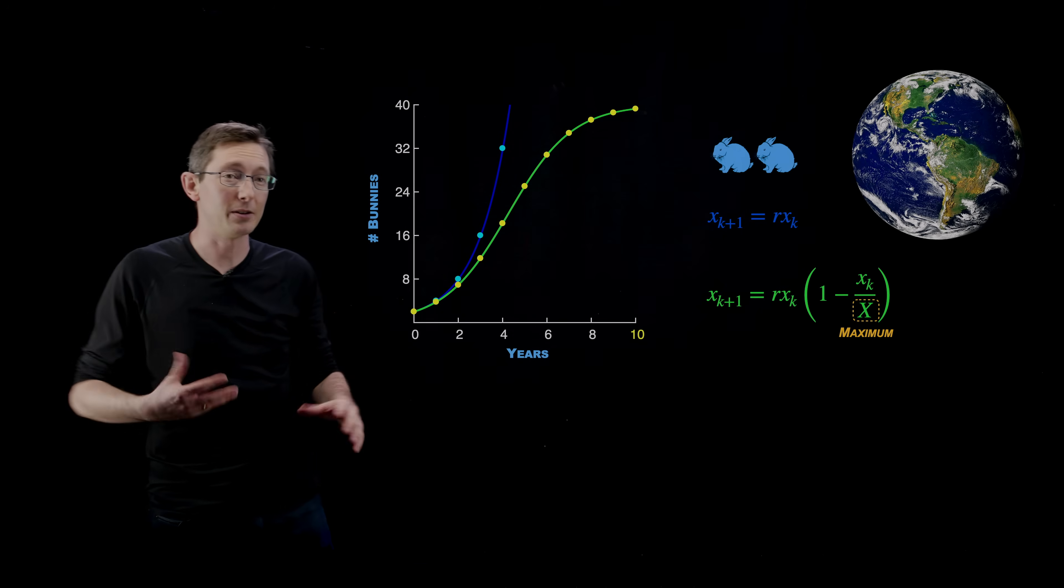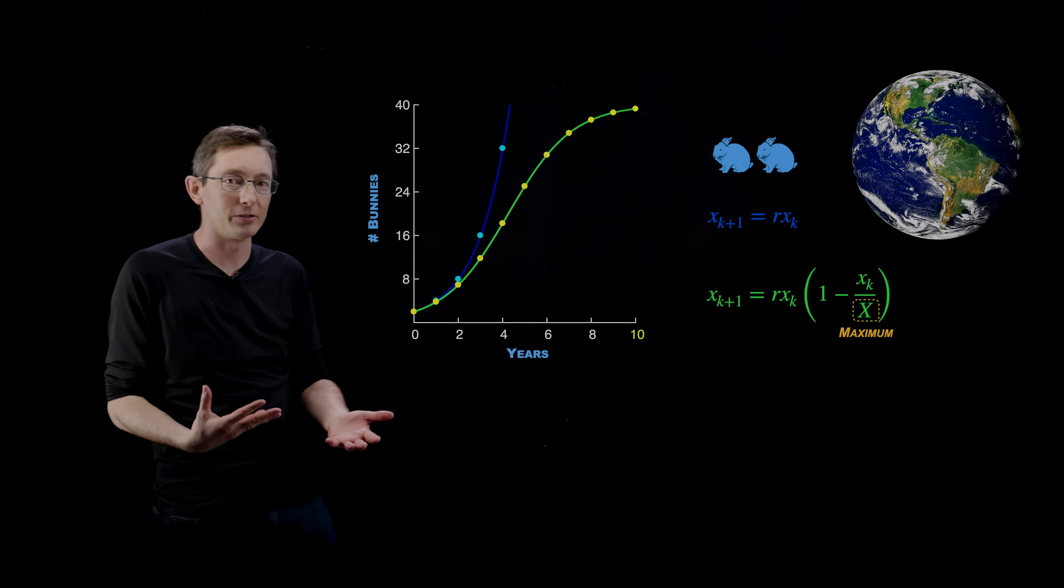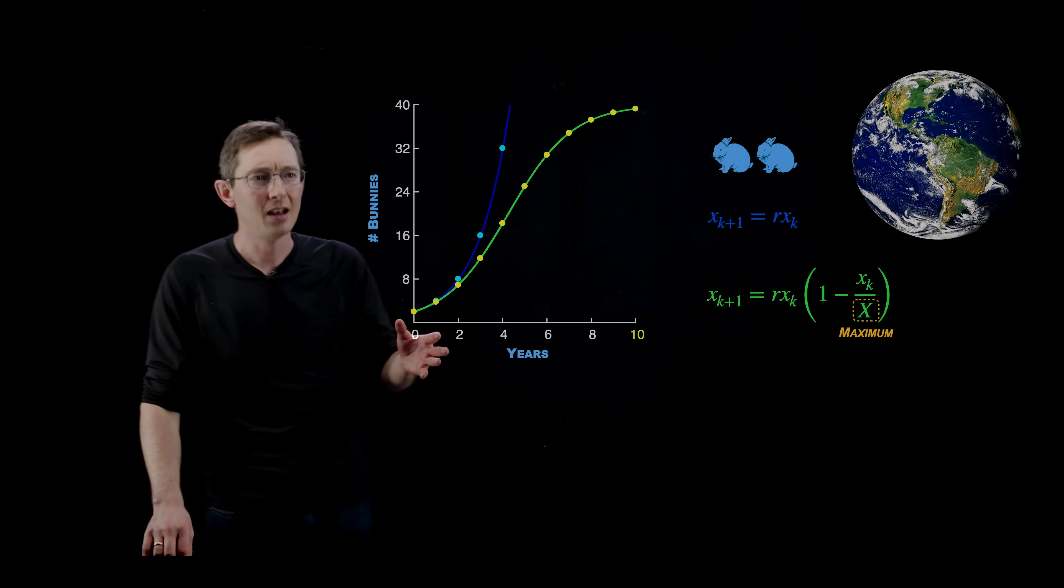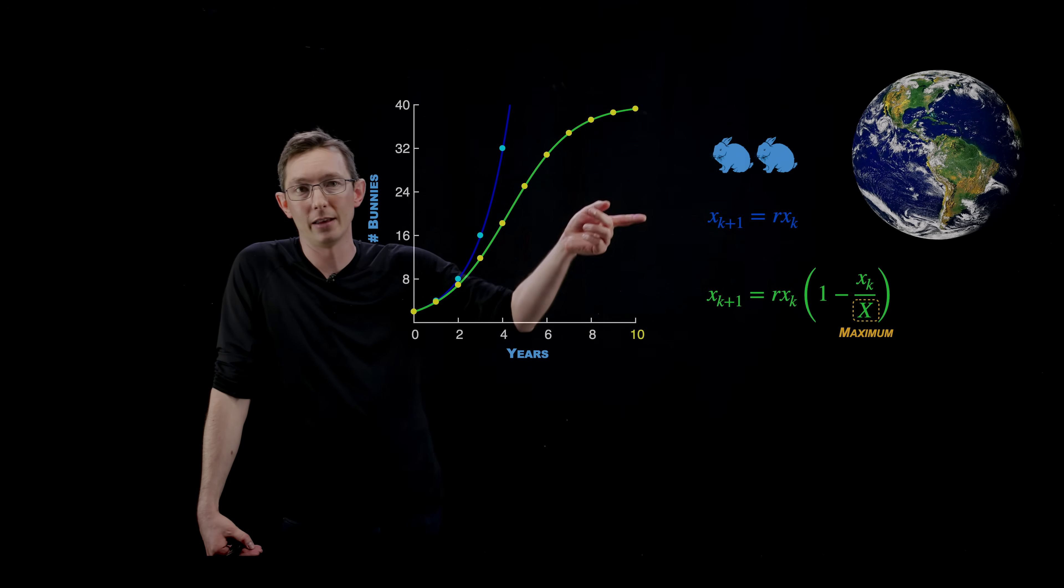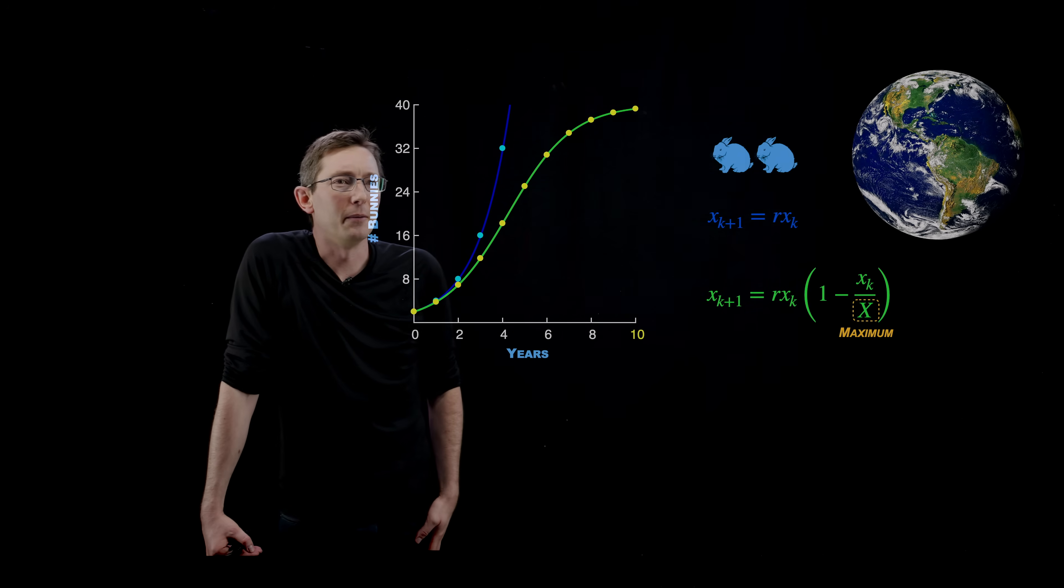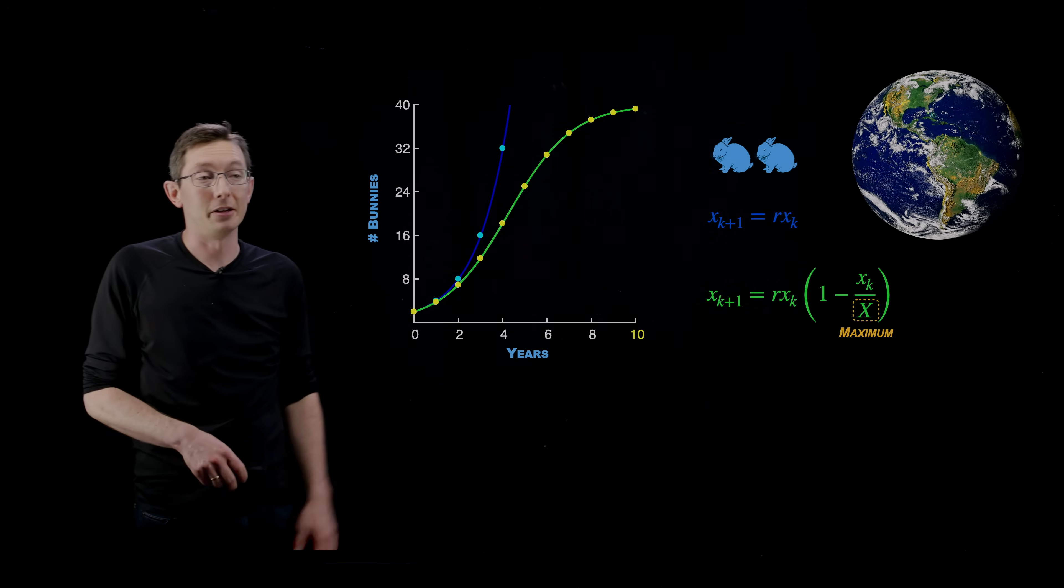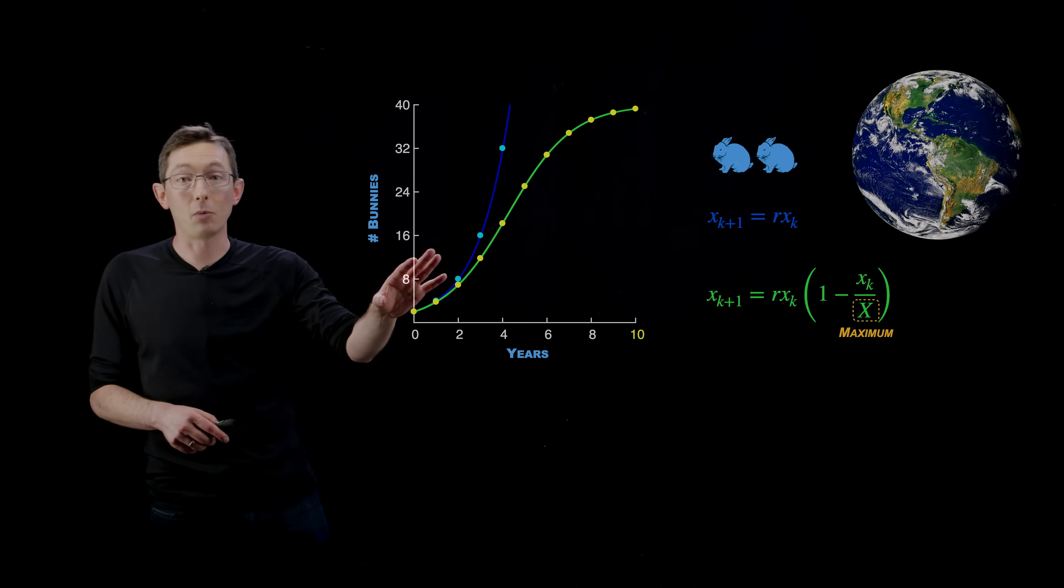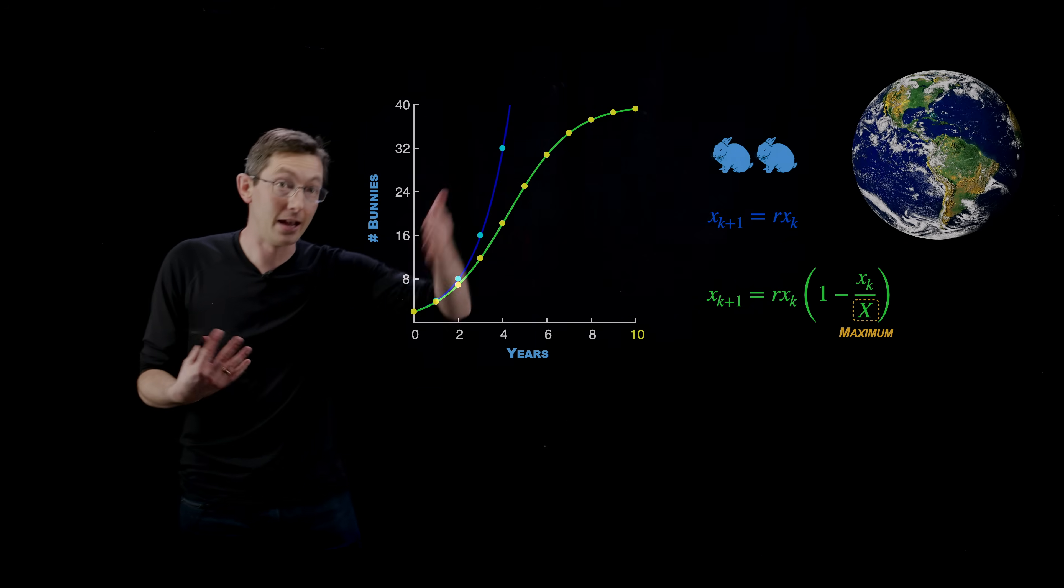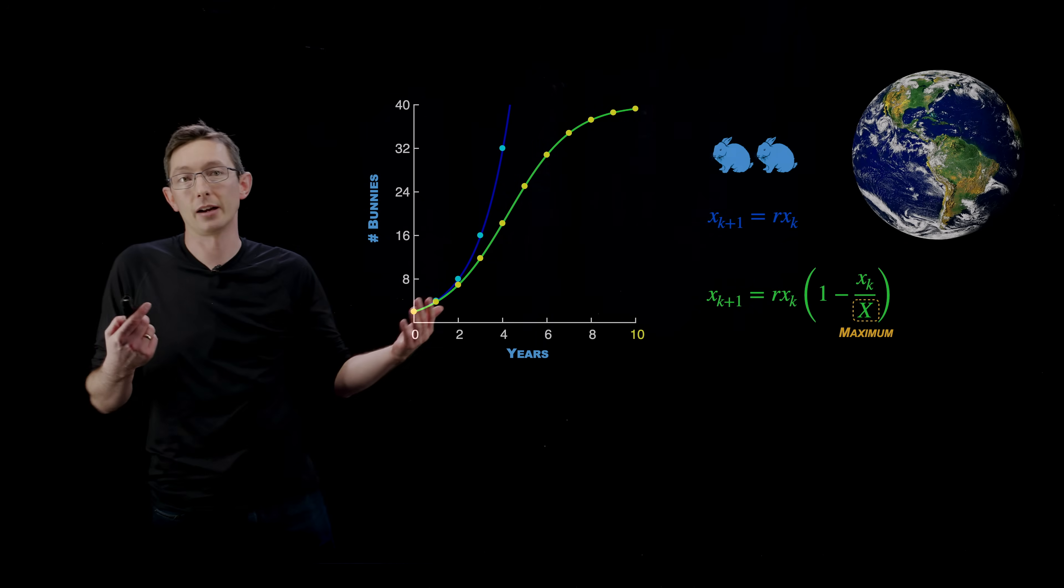This is sometimes called a sigmoidal function. This is called the logistic equation. It's super important in dynamical systems, in lots of systems. There have actually been some great YouTube videos on the logistic equation that I'll link to. I'm pretty sure Veritasium did a really nice one recently on this equation. So that's one way that exponential growth curtails in population dynamics.